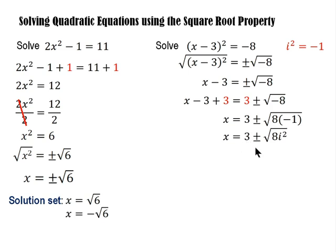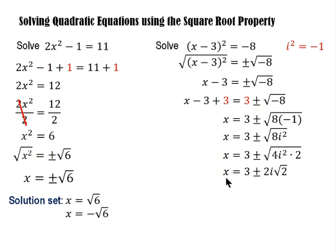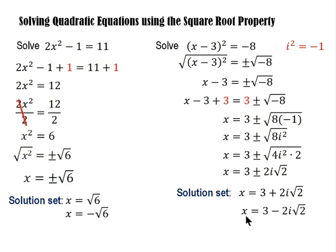So x equals 3 plus or minus the square root of 8i squared. We factor 8i squared into 4i squared times 2, since one factor is a perfect square. So x equals 3 plus or minus the square root of 4i squared times 2. The square root of 4i squared is 2i, so x equals 3 plus or minus 2i times the square root of 2. Our solution set is x equals 3 plus 2i root 2, and x equals 3 minus 2i root 2. So we have two imaginary solutions for this quadratic equation.